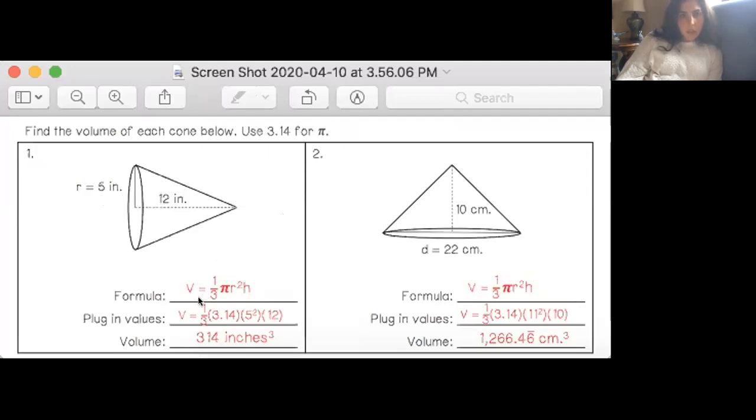The height here is 12, so when you do one third of 3.14 times five squared times 12, you should have gotten 314 inches cubed. Did the same thing over here: volume equals one third of the area of the base times the height.